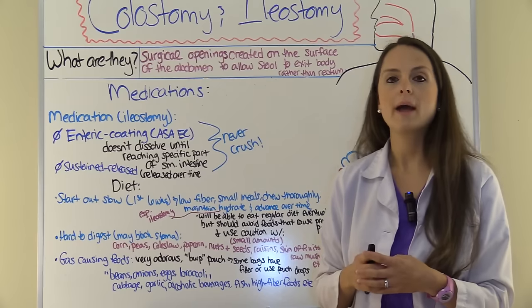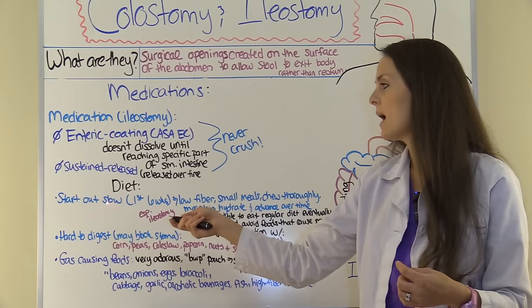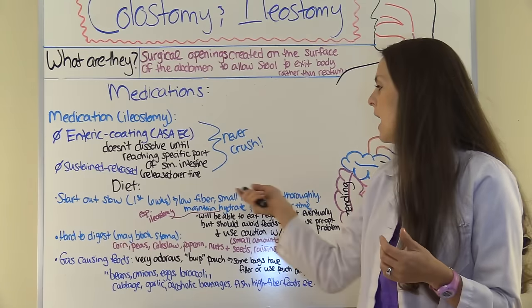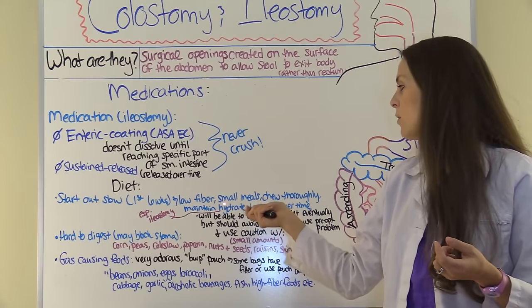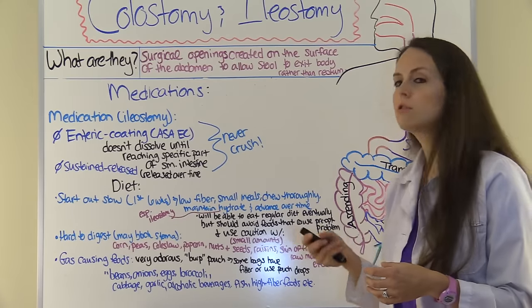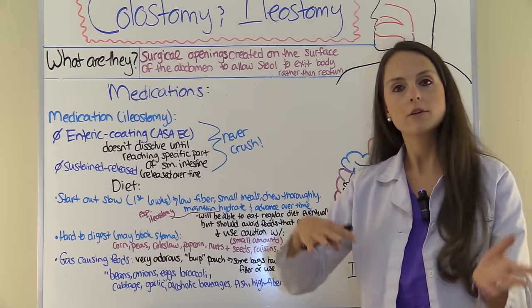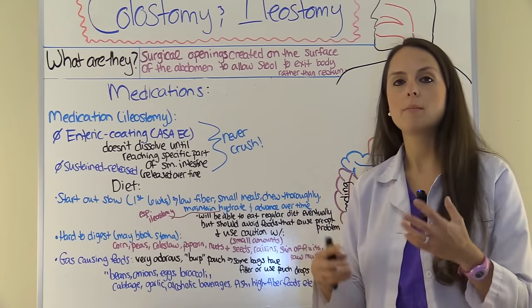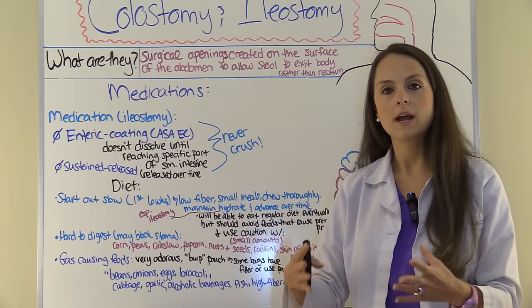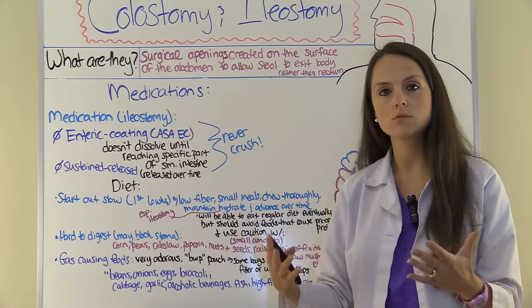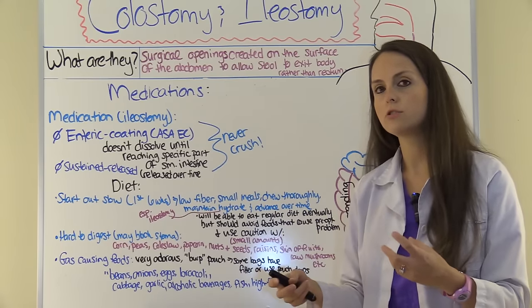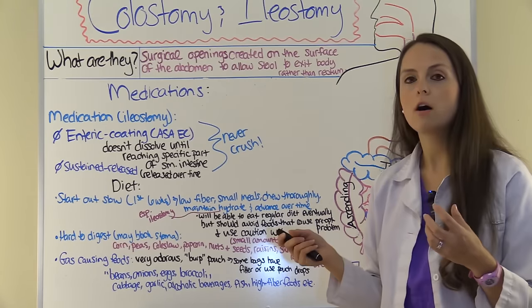Now let's talk about diet. When a patient has just had an ostomy placed, they will generally start out slow with food for about the first one to six weeks, advancing as tolerated to let the gut readjust. They'll usually start on a low-fiber diet, eat small meals throughout the day rather than large ones, and chew their food thoroughly since depending on the ostomy location, food isn't broken down like it normally would be. Maintaining hydration is especially important with ileostomies, as the drainage is rich in water and electrolytes. Drinking Gatorade or an electrolyte solution helps. They will eventually be able to follow a regular diet.